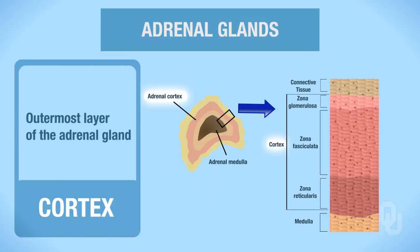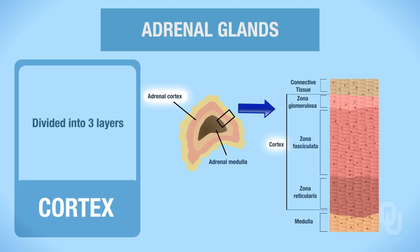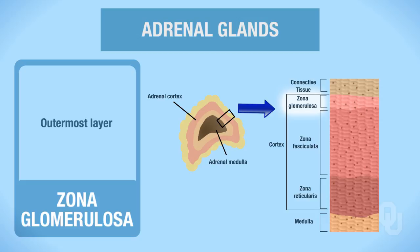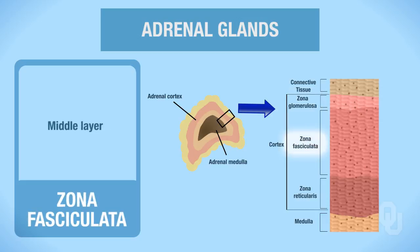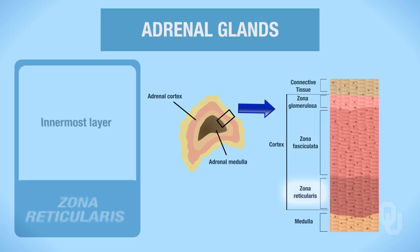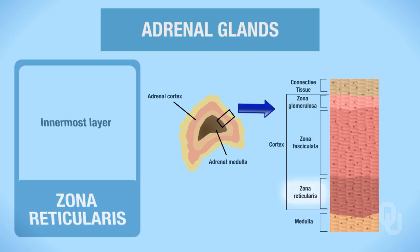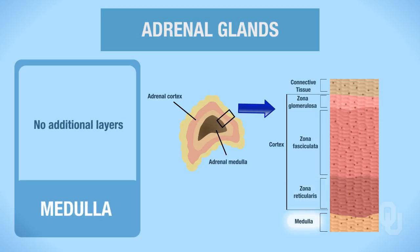The adrenal cortex is divided into three layers. There is the zona glomerulosa, which is the outermost layer of the adrenal cortex. There's the zona fasciculata, which is the middle layer. And there is the zona reticularis, which is the innermost region of the adrenal cortex. The medulla has no additional layers.